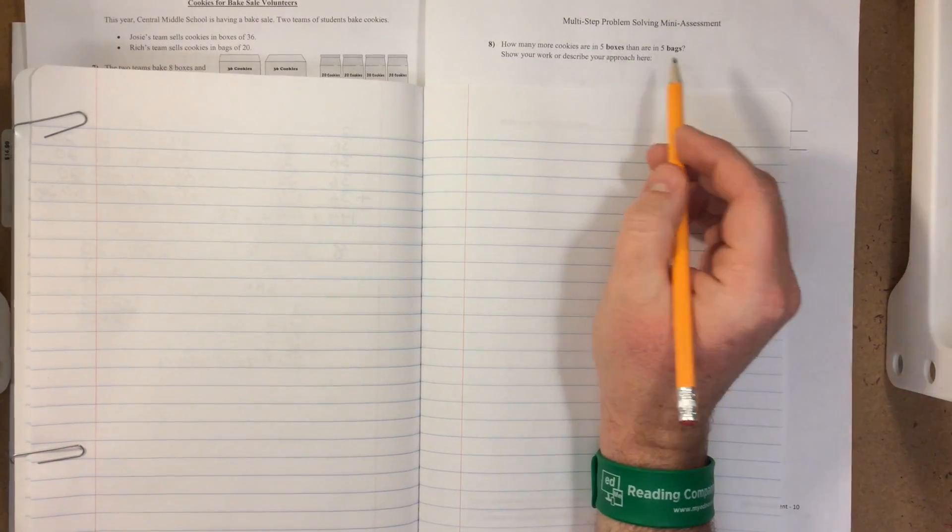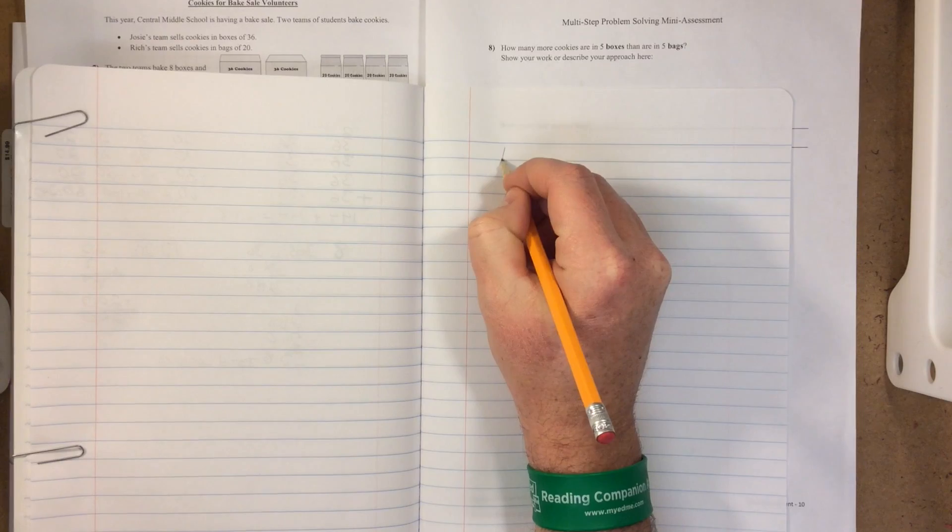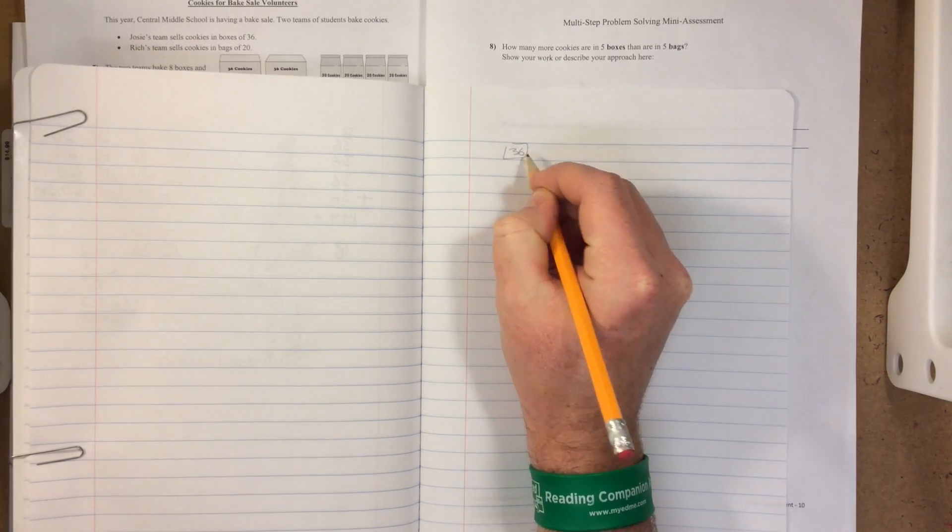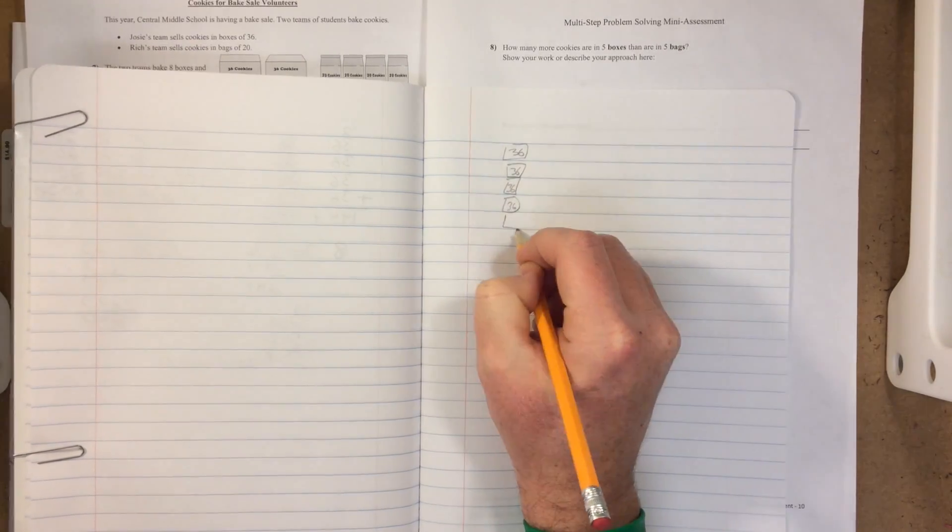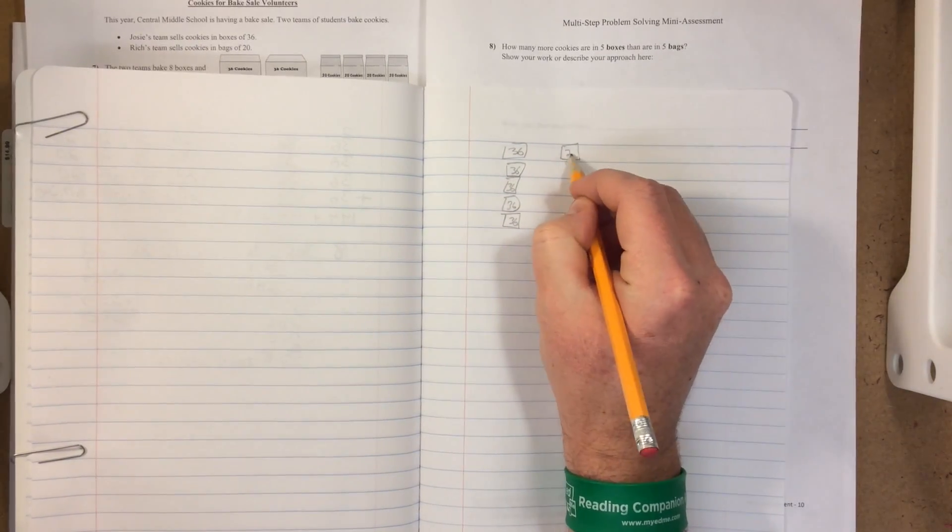In this situation, what we're asking for is how many more cookies are in five boxes than in five bags. Each box has 36 cookies so we can draw five. We can draw five 20s here because each bag has 20.